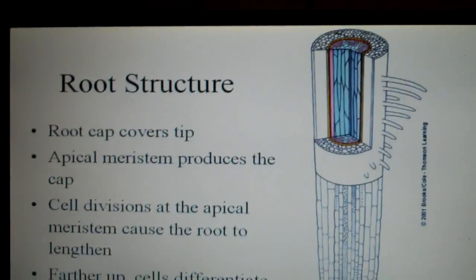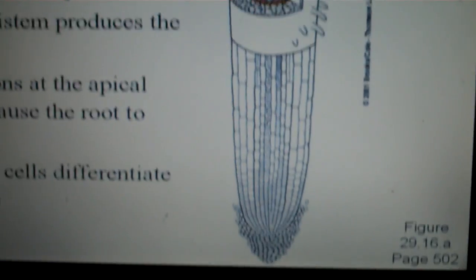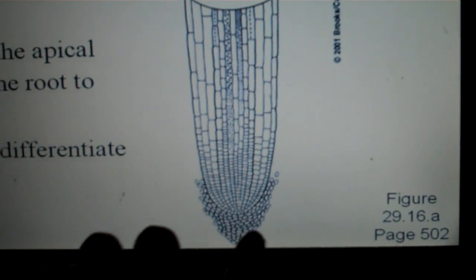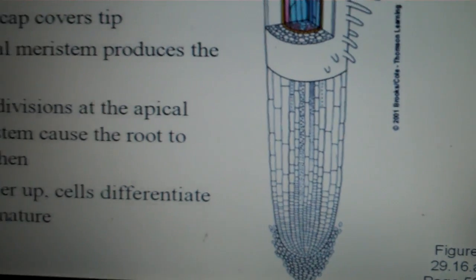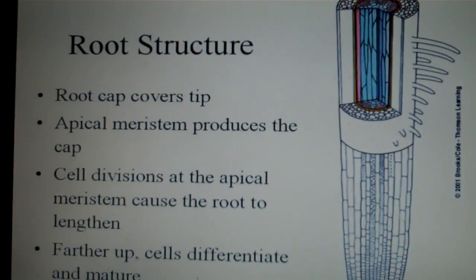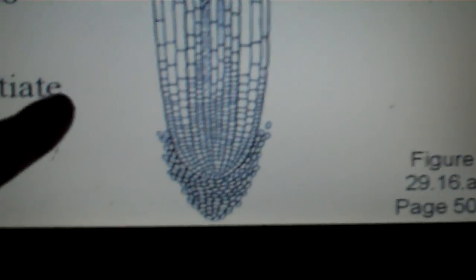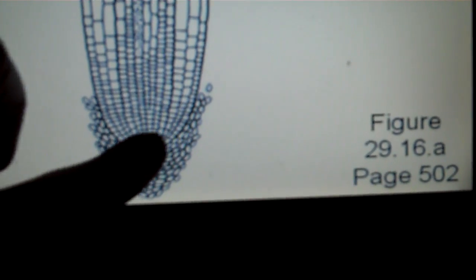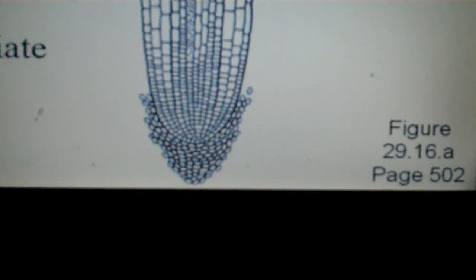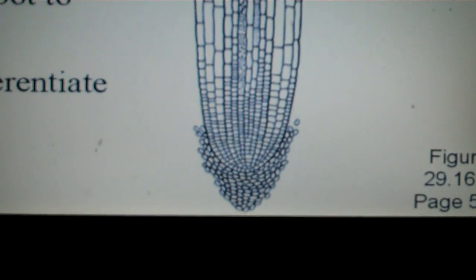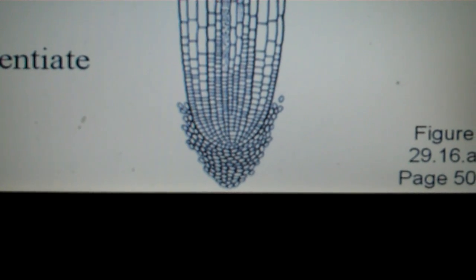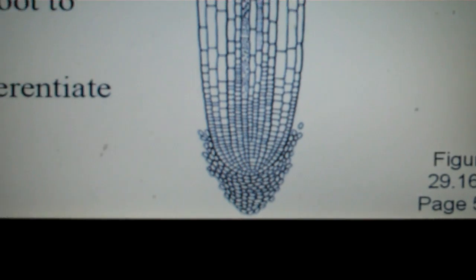Now the root structure. There's a root cap that covers the tip. It's going to protect the root as it pushes through the soil. There's an apical meristem that produces the cap, so here would be the apical meristem on the tip of the root. This is where most of the primary growth is going to occur. This is the same that occurs in the shoot system of a plant.